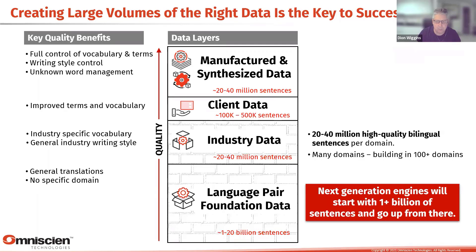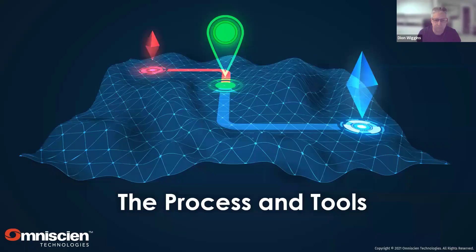The next-generation engines we're starting now use document data — we're building millions and billions of sentences. We'll build engines starting with at least 1 billion sentences and going up from there. Many domains will be built in, each with as much as 20 to 40 million sentences. Over time we're building out around 100 domains in our roadmap. Previously we had 'automotive' as a domain; it's now a subcategory of transportation. All of these things go to more granular domains and we can switch between them and between writing styles — all being built into our engines.